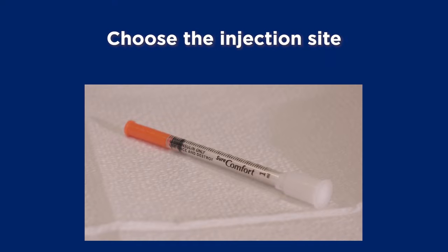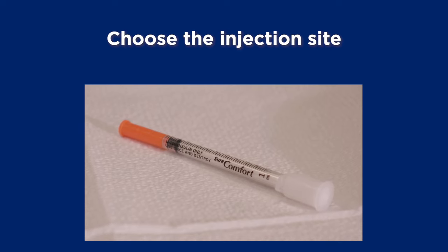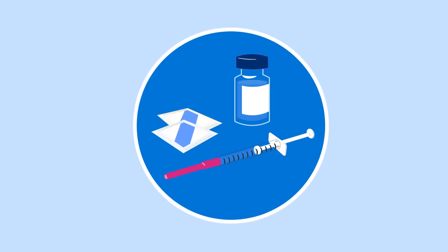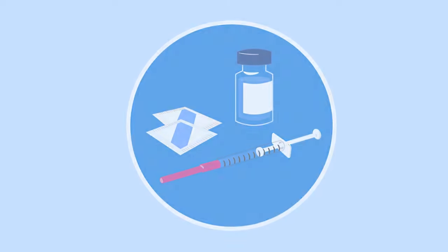Once the syringe is ready, choose the injection site, the place on your penis where you'll inject the medication. You must inject the medication into a specific area of your penis so you don't inject into a nerve or blood vessel. Imagine the shaft of your penis is divided in three parts.